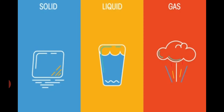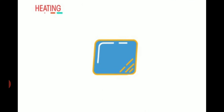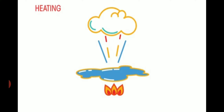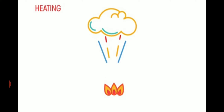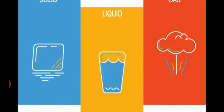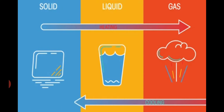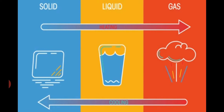These are the three states of matter: solid, liquid, and gas. By the process of heating — when we provide energy — the liquid changes into gas. By the process of cooling, the gas gets converted back to liquid. So, solid to liquid to gas, we have to heat; and gas to liquid to solid, we have to cool it down.